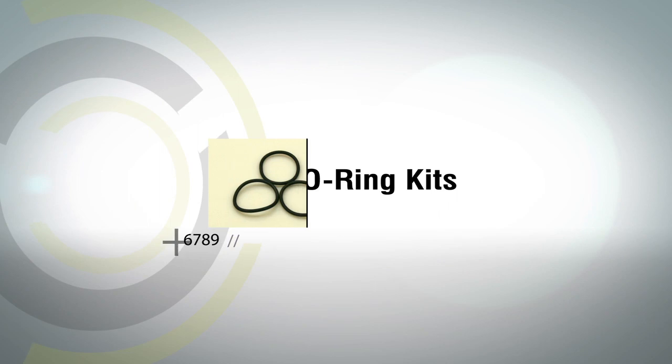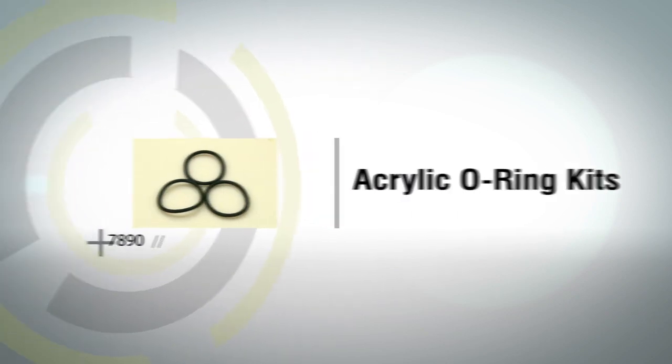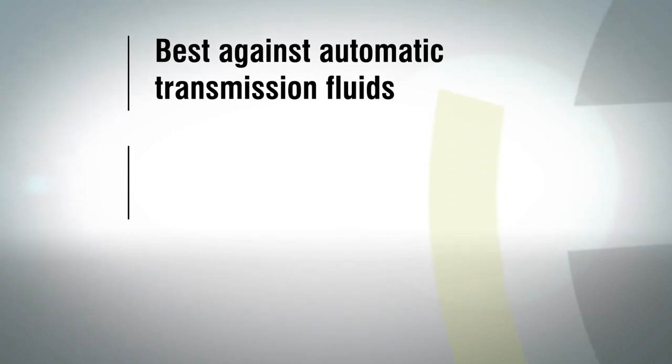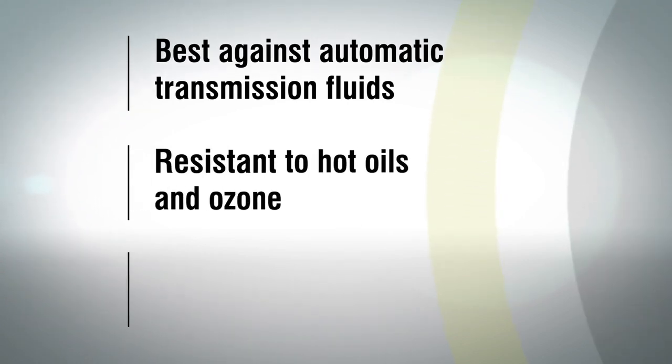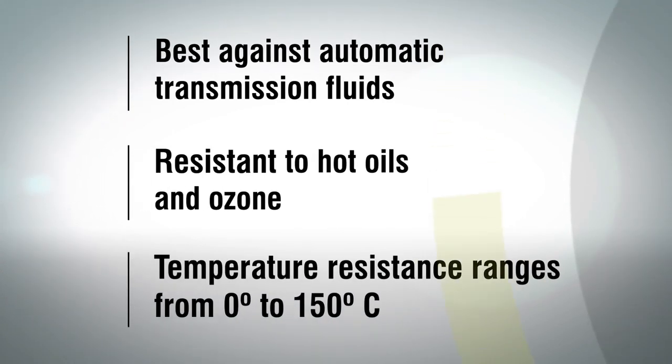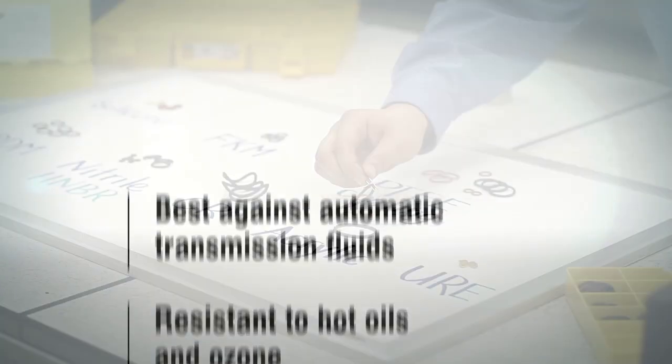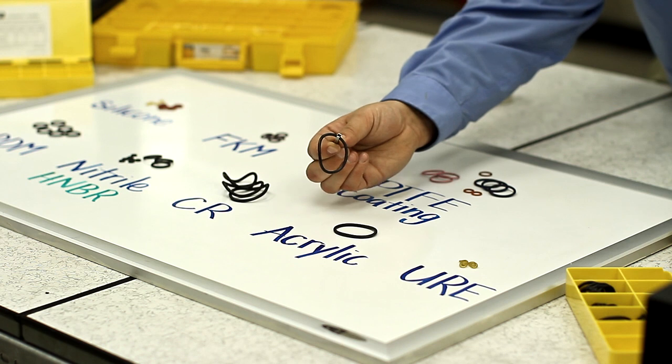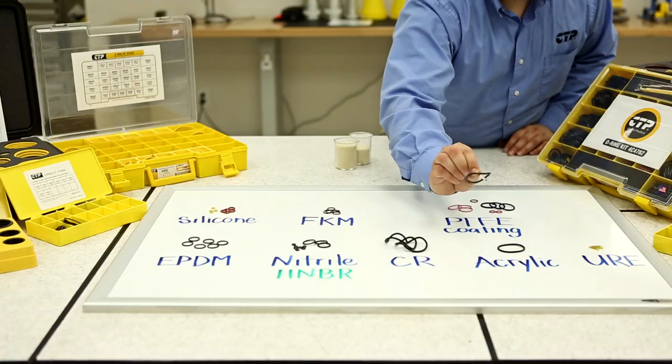Acrylic is best used against automatic transmission fluids, hot oils, and ozone due to its high levels of heat resistance. Acrylic can resist temperatures from zero degrees Celsius to 150 degrees. However, it's best not to apply acrylic O-rings where water or alcohol will be present.